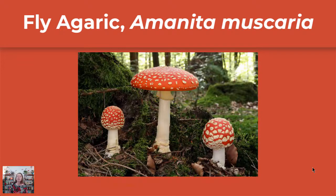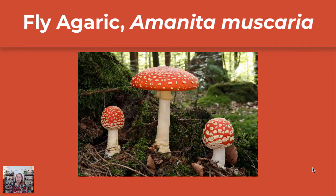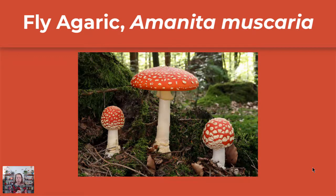Today's species is the Amanita muscaria. I've chosen it because it really does have a worldwide distribution, especially this genus. Most of them are poisonous, some are actually deadly, and a few are edible under the right conditions — not this species, but a related species in this genus. The species is found all throughout the northern hemispheres of the world, so it's really common.